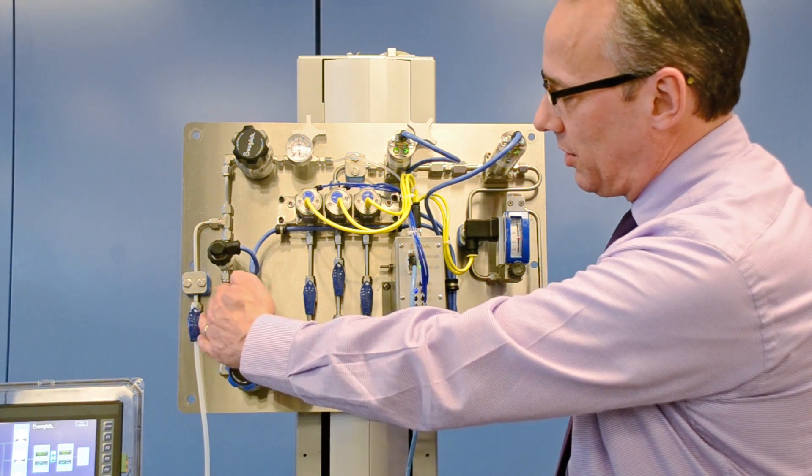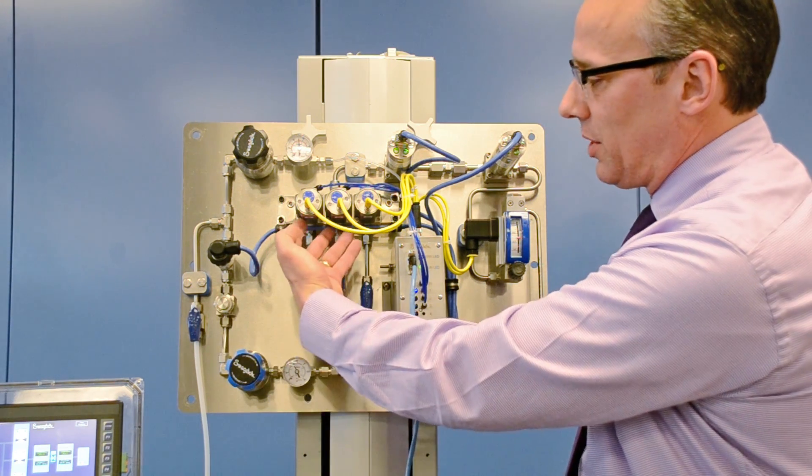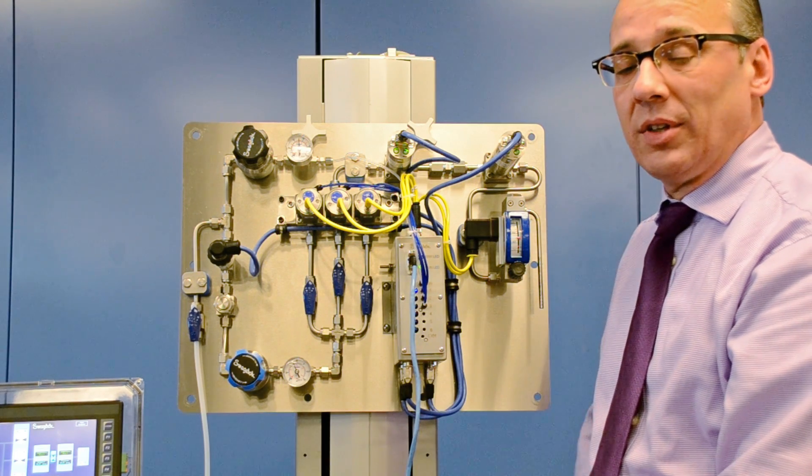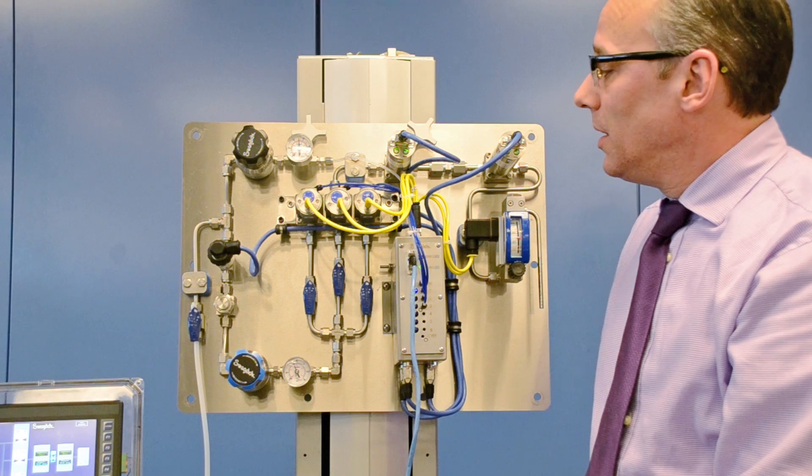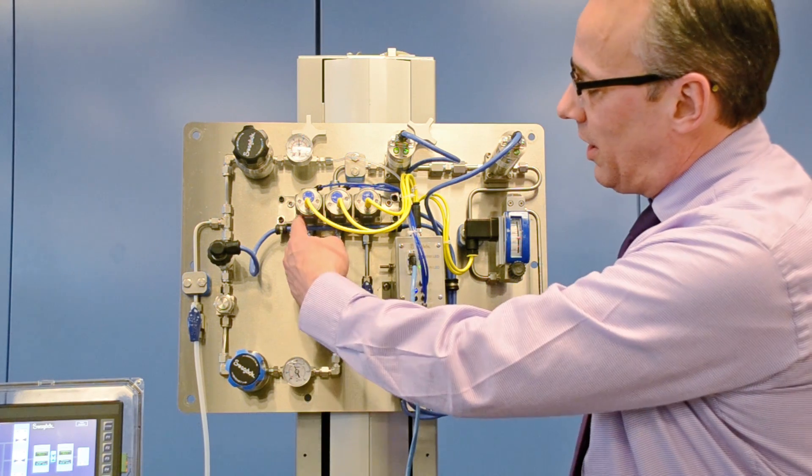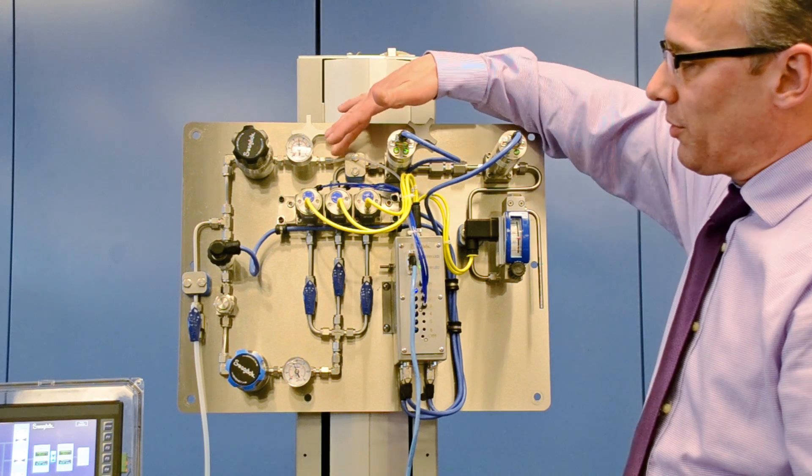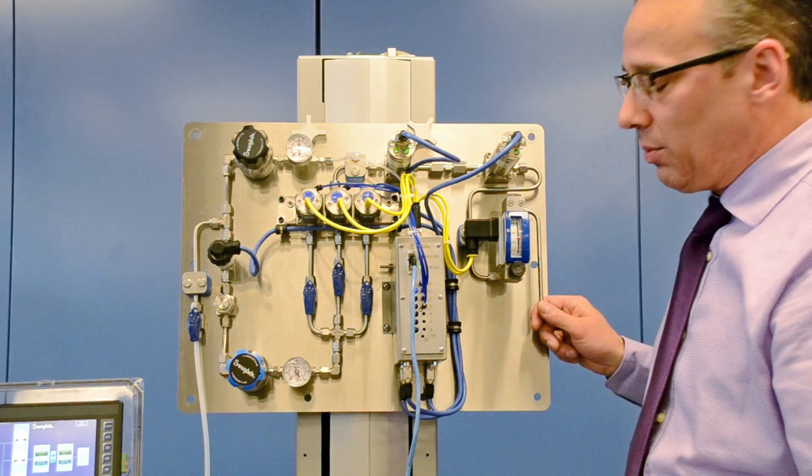As the stream comes in through this system it ultimately makes its way up to this bank of valves that we call the Swagelok stream selector valves or SSVs. Opening one of these valves will allow one of these process streams to ultimately flow through the system and make its way to the analyzer.